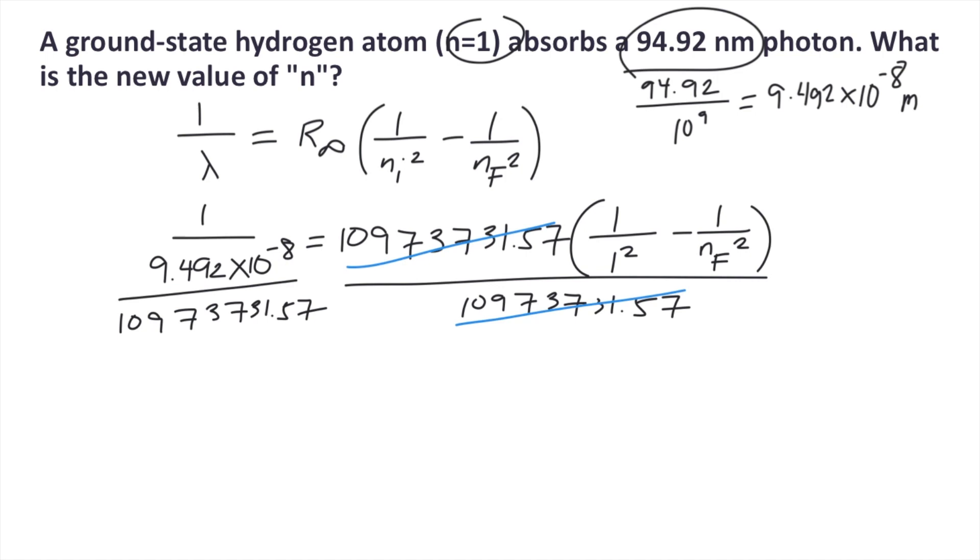This gives you approximately 0.96. On the right side, you have 1 divided by 1 squared, which equals 1, minus 1 over nf squared. Next, transfer this 1 to the left side. It becomes negative. So 0.96 minus 1 equals negative 1 over nf squared.